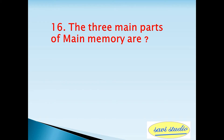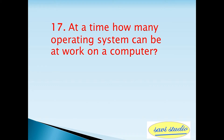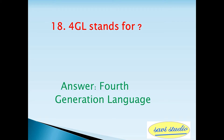Sixteenth question: the three main parts of main memory are? Answer: RAM, ROM, and cache. Seventeenth question: at a time how many operating systems can be worked on a computer? Answer: one. Eighteenth question: 4GL stands for? Answer: Fourth Generation Language.